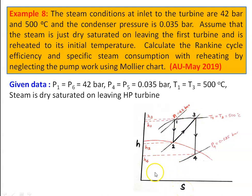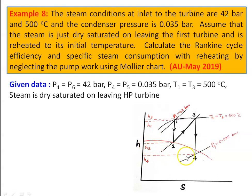Entropy is on the x-axis and specific enthalpy on the y-axis. We have constant pressure lines running throughout the diagram for various pressures — all pressures available in the steam table are available here. Below the saturation line we have constant dryness fraction lines, and above the saturation line constant temperature lines. We want to calculate enthalpy only — locate the point and find the enthalpy from the Mollier chart.